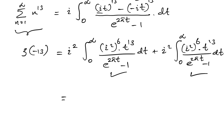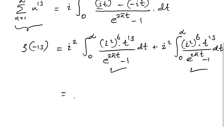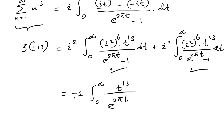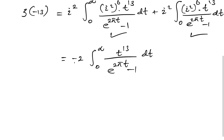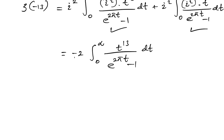Combining the two integrals gives a factor of 2 times i^2 times (-1)^6, which simplifies to minus 2, times the integral from 0 to infinity of t^13 over [e^(2πt) minus 1] dt. To evaluate this integral we apply the substitution 2πt = x.